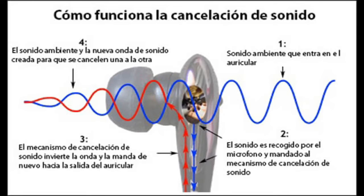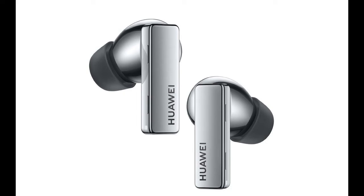Thanks to integrated microphones, the system identifies the external noise and sends an identical but opposite acoustic cancellation signal, thus blocking the sound. This is also known as sound compensation. The system works independently in the left and right channel, as it is a predictive system that compensates for noise as it arrives at each microphone, and depending on the type or intensity of external noise it will emit a specific type of wave.